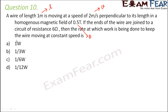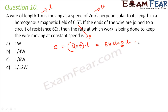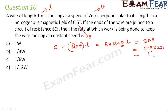We will first find the induced EMF. Induced EMF equals B cross v into L, which is B·v·sin θ·L. Since θ is 90 degrees, this becomes B·v·L. B is 0.5, v is 2, L is 1, so induced EMF equals 1 volt.